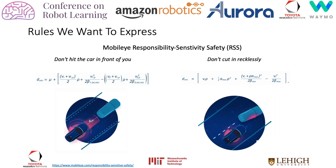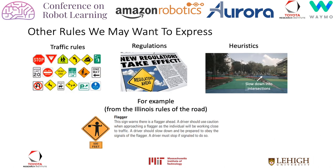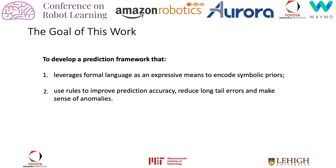Incorporating rules into prediction models is also a research problem. Rules widely exist in the driving domain, ranging from rules of the road, state regulations, and heuristics of best driving practices. These rules can be as simple as stop at the red light, or as complex as instructions for a flagman.